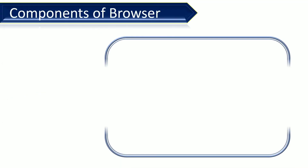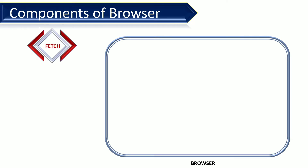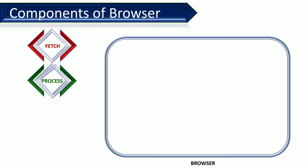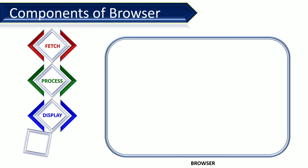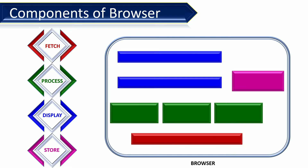Before talking about the main components of the browser, let's learn about the main operations of the browser. First, it has to fetch the data from the server. Then the received data needs to be processed and displayed, and also it needs to be stored to improve the performance of the browser.